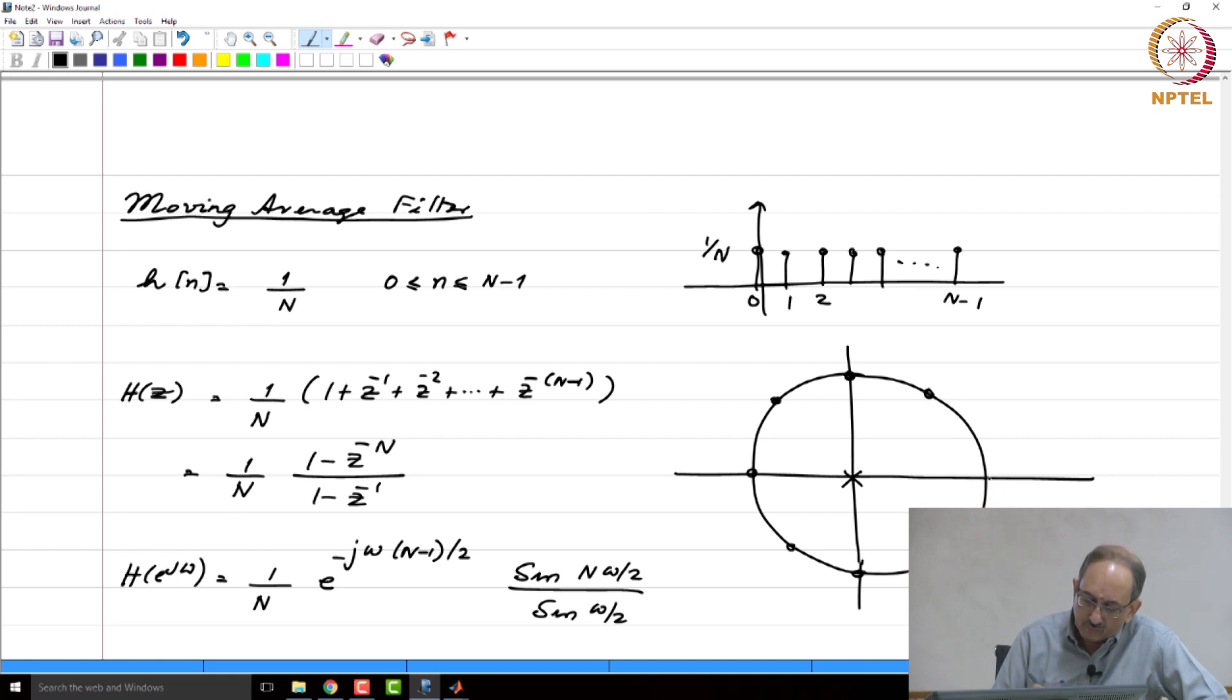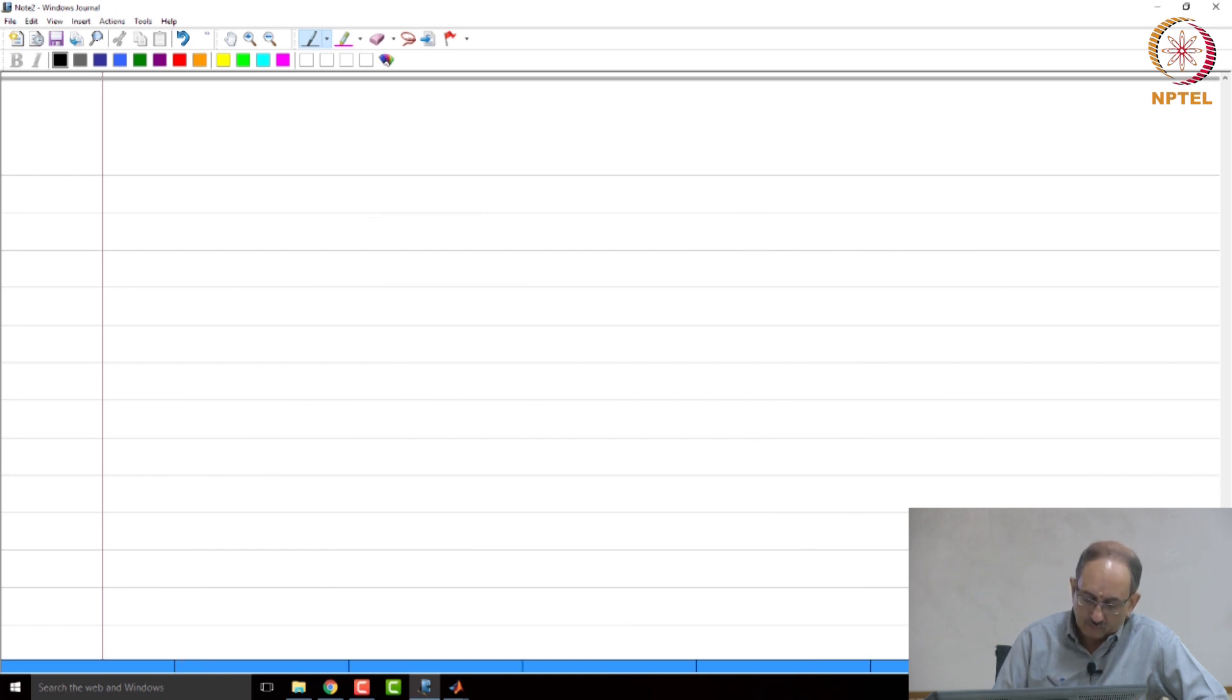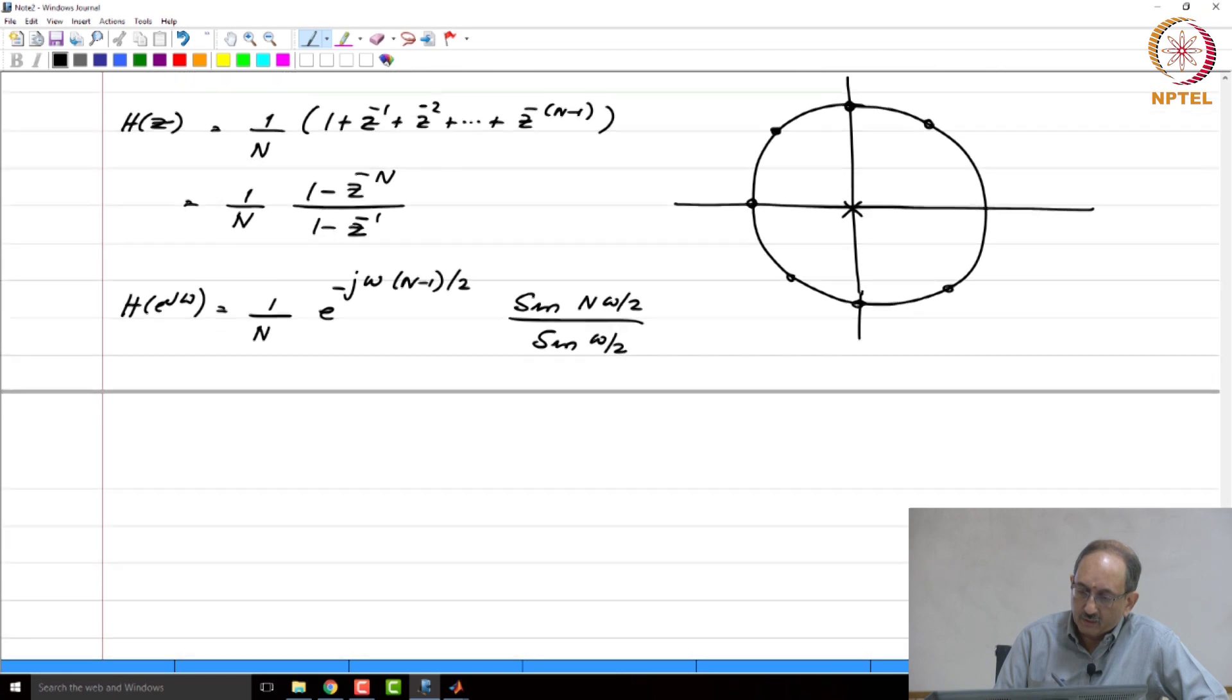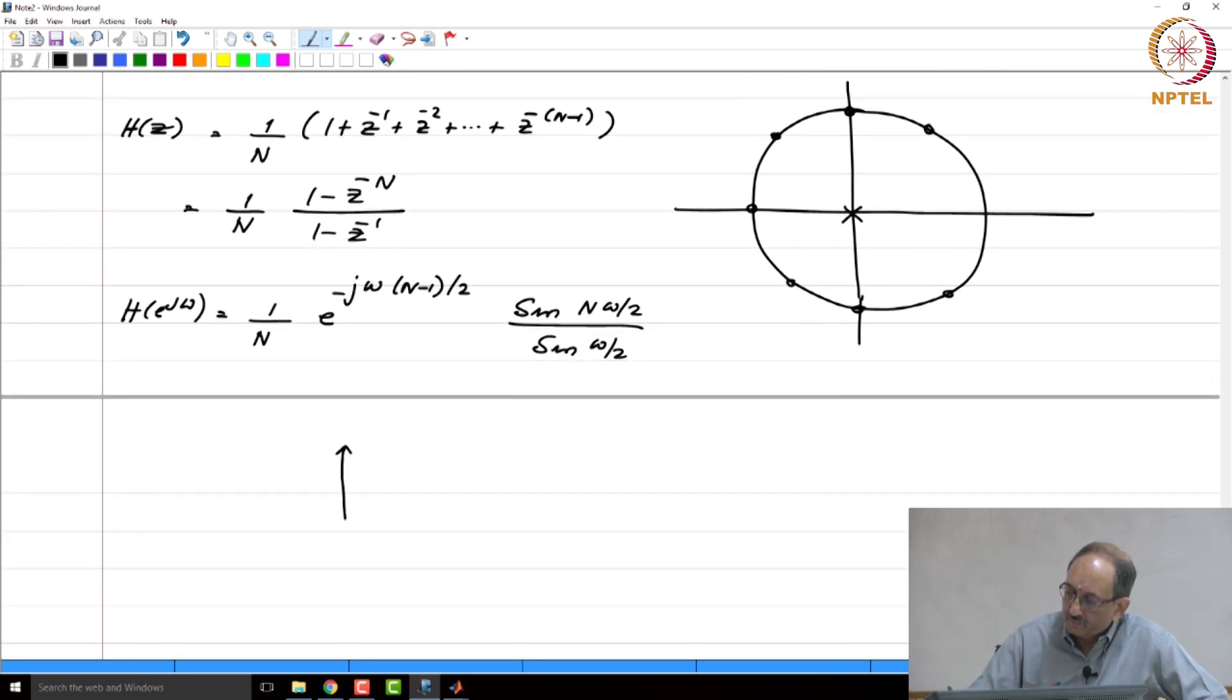Therefore, this is how the final pole 0 plot looks like. And then remember we are looking at magnitude frequency response, and we have been introduced to the geometric interpretation of the frequency response. And hence, if you are on the unit circle here, you will have a certain value. Therefore, a response will have a certain value like this.